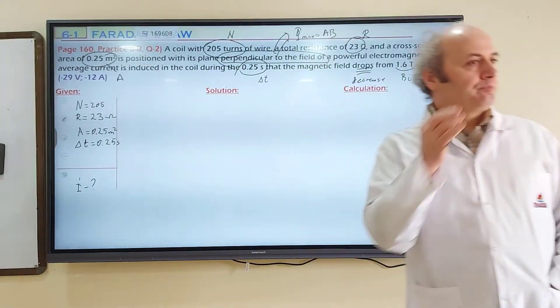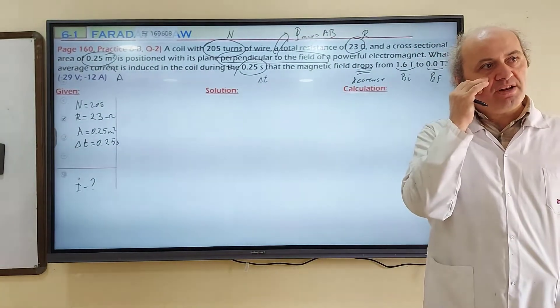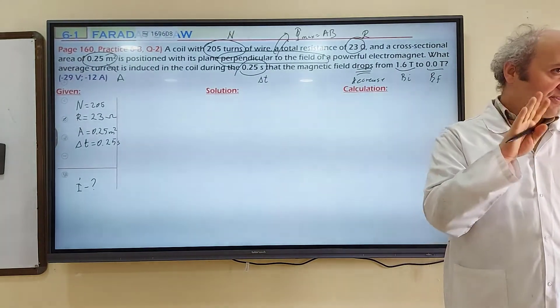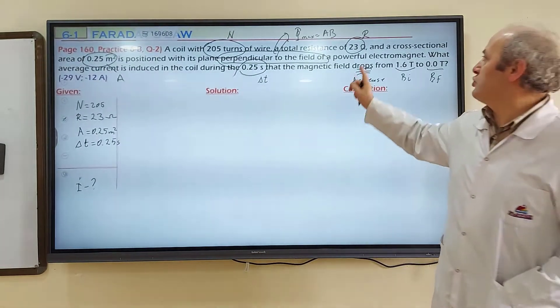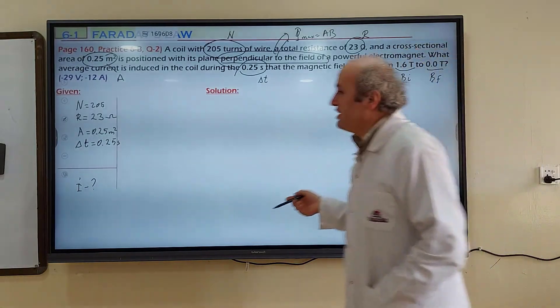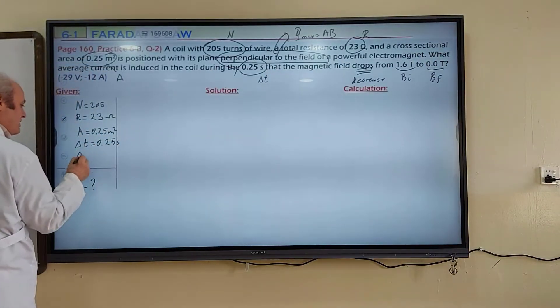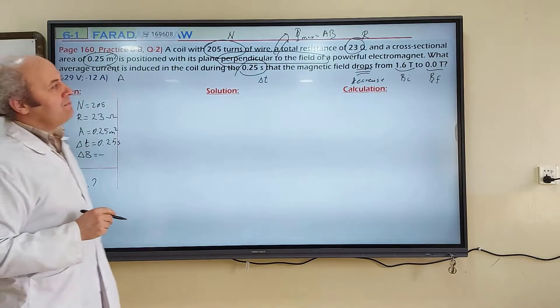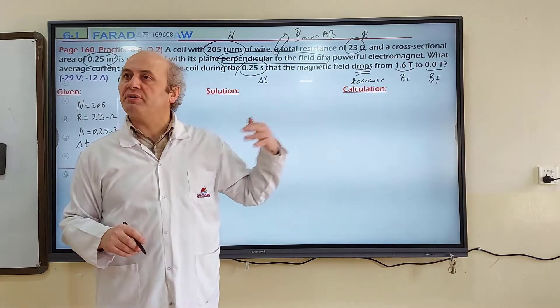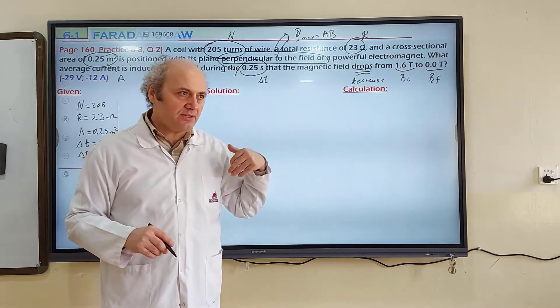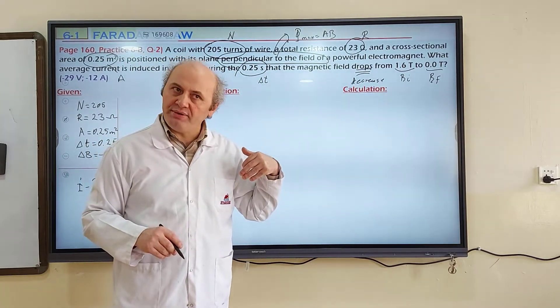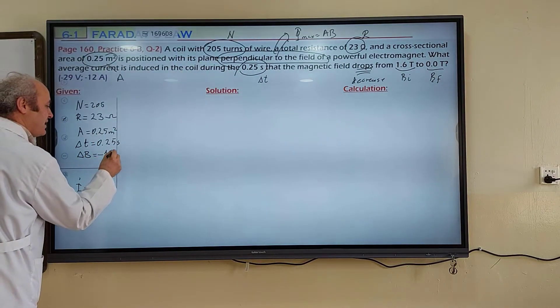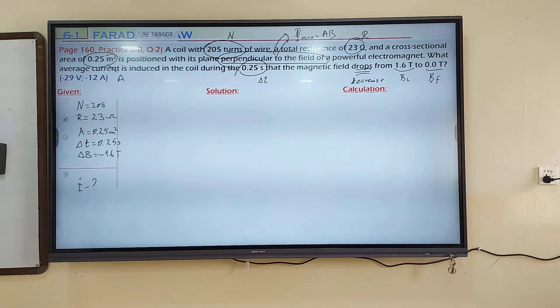If it's a drop, is this change in magnetic field negative or positive? Negative. Every decrease is a negative change. This drop is a decrease. How much is the decrease? Delta B is the change in magnetic field. It's a negative change. From 1.6 to 0: 0 minus 1.6 equals negative 1.6 Tesla. Negative 1.6 Tesla is the change in magnetic field.